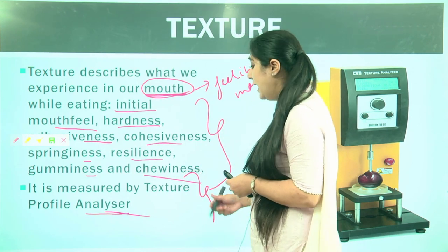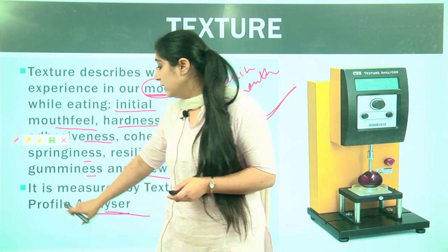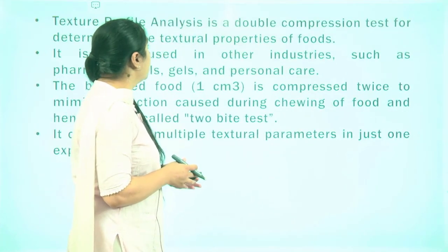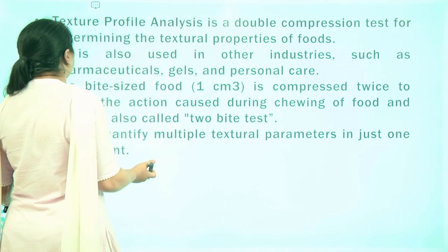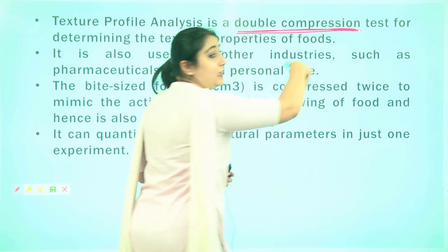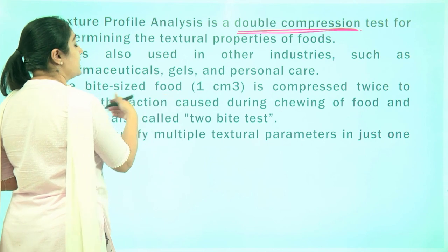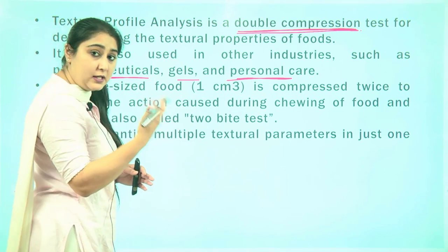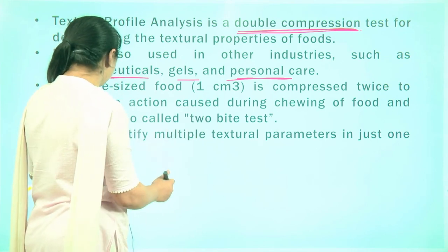To determine all of these properties, we use an equipment known as a Texture Profile Analyzer. Texture Profile Analysis is basically a double compression test for determining the texture properties of food. This also finds use in certain other industries besides food, such as pharmaceutical gel and personal care industries.